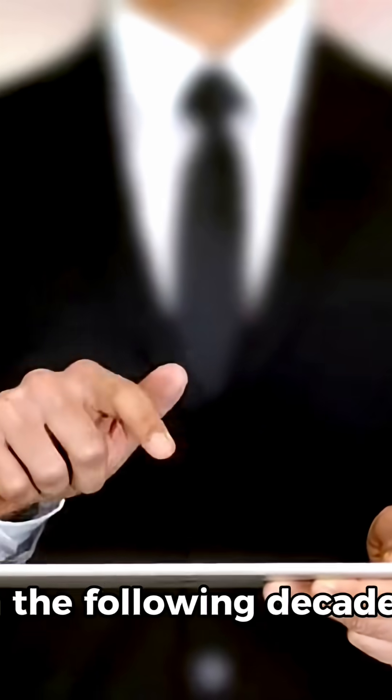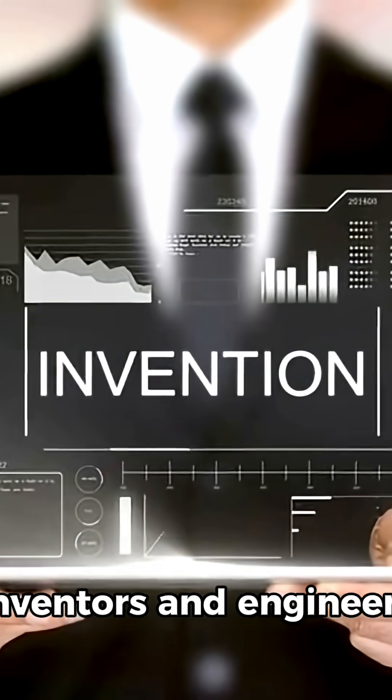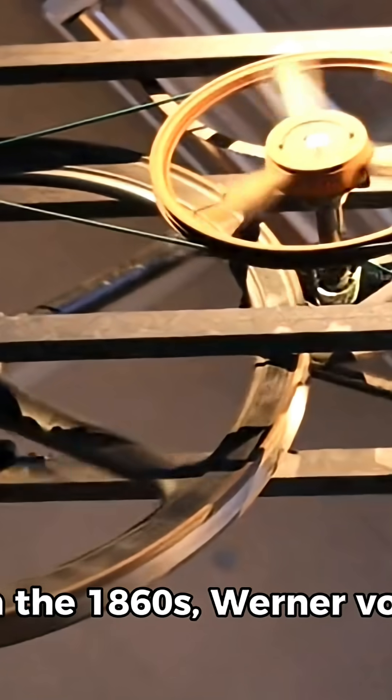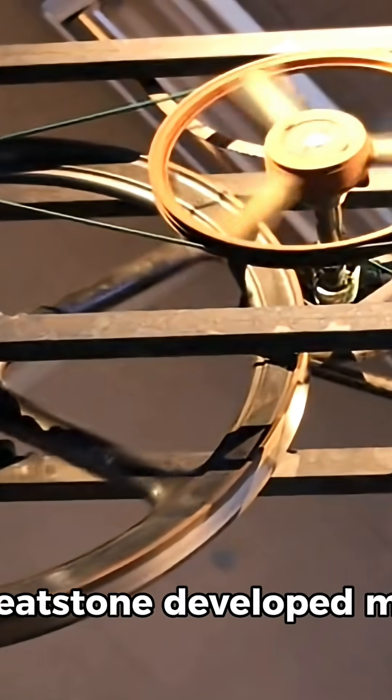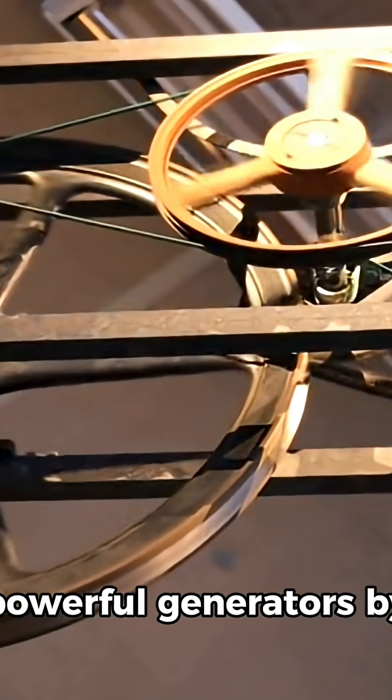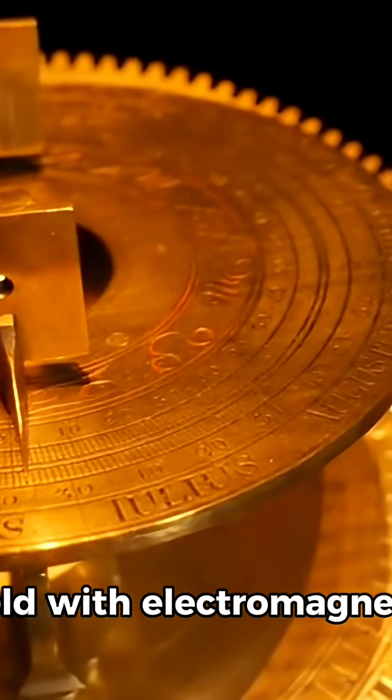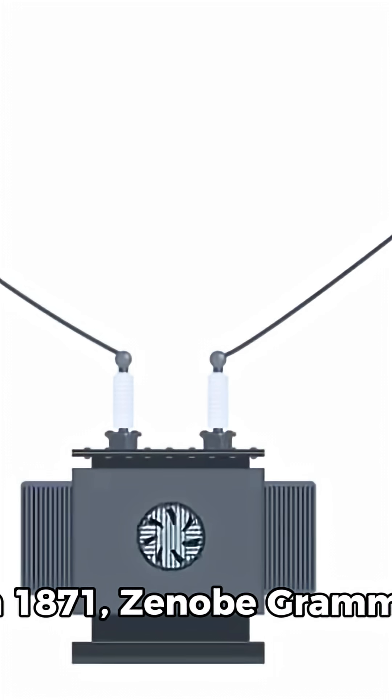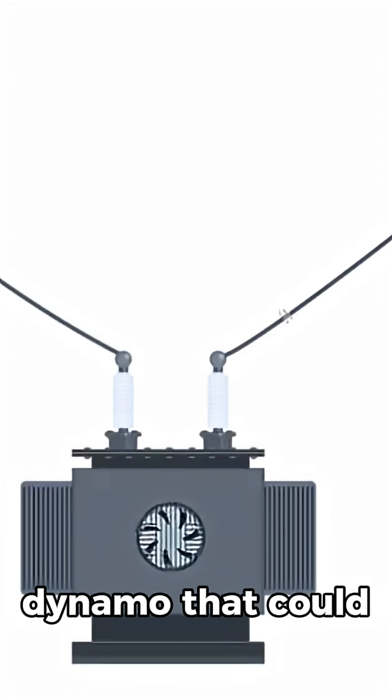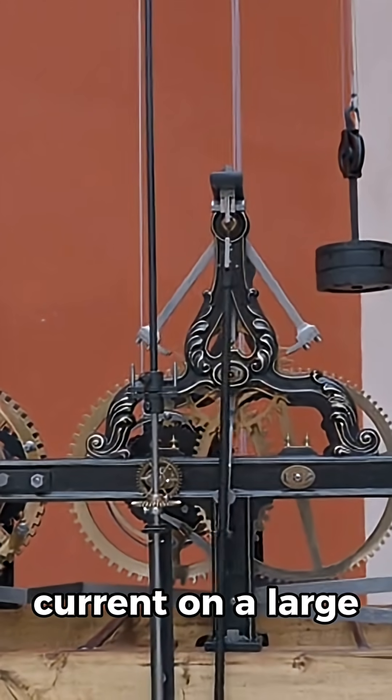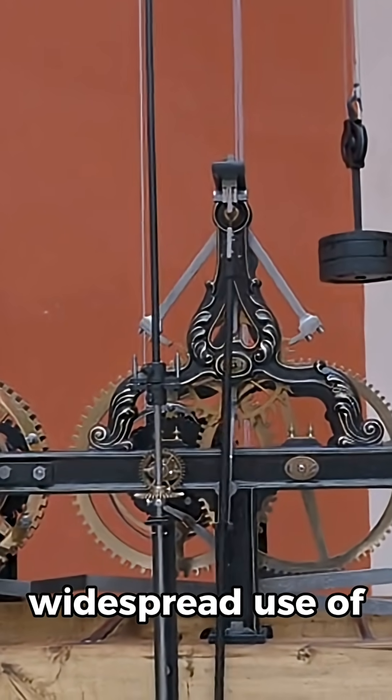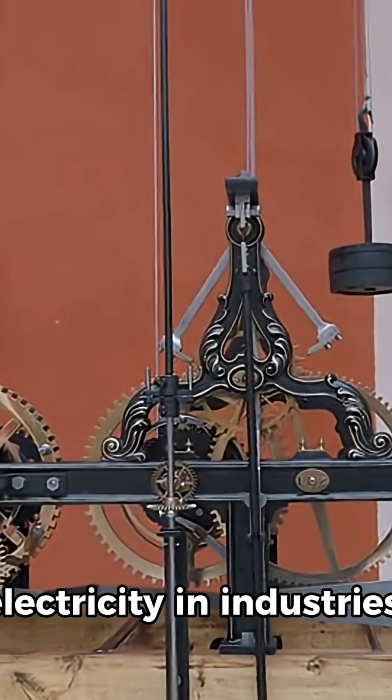In the following decades, inventors and engineers refined the concept. In the 1860s, Werner von Siemens and Charles Wheatstone developed more powerful generators by improving the magnetic field with electromagnets. In 1871, Zenob Graham introduced a commercial dynamo that could produce steady direct current on a large scale, leading to the widespread use of electricity in industries.